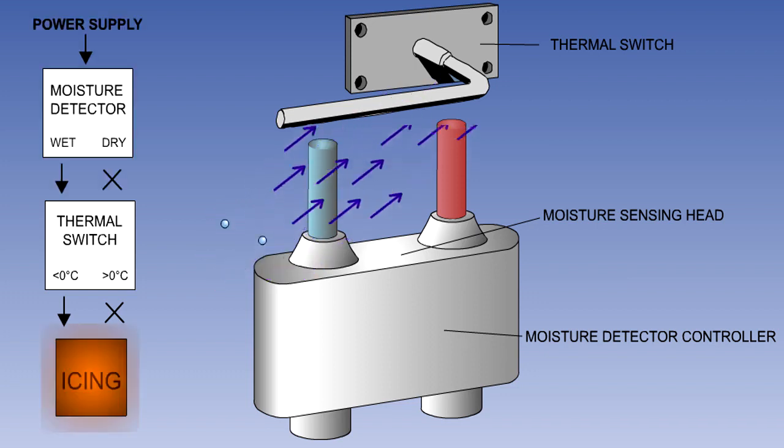If both the moisture detector controller and the thermal switch are sensing icing conditions, then an ice warning will be given, or the automatic anti-icing or de-icing cycles will be initiated.